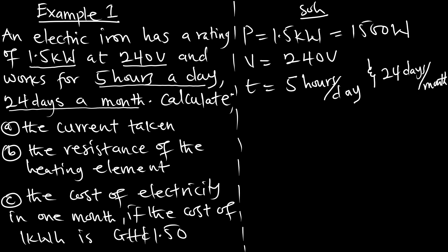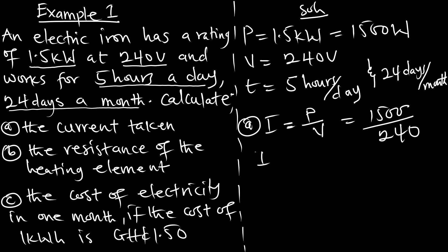The question says we should calculate the current taken by the electric iron. Current I equals power divided by voltage. We have our power to be 1,500 and the voltage to be 240. The current being taken by the electric iron is going to be 6.25 amperes, from the power expression P = IV.